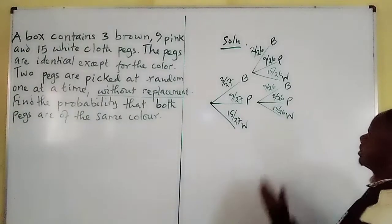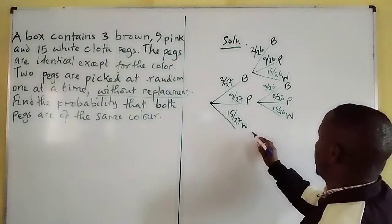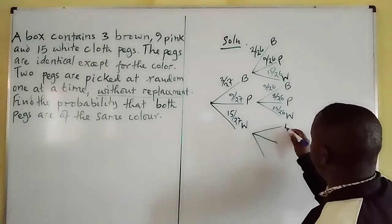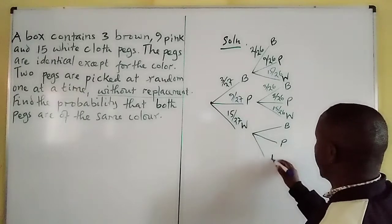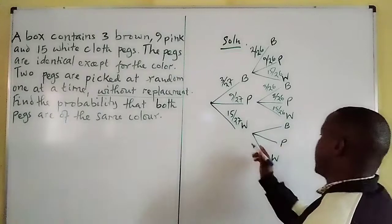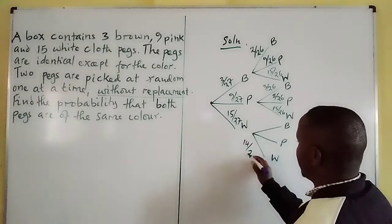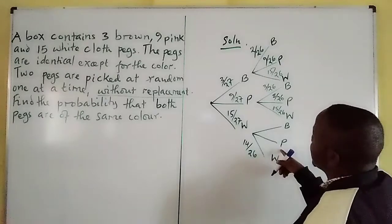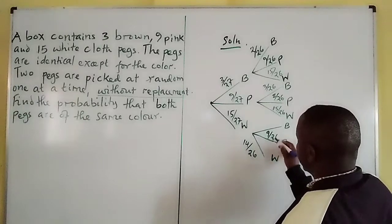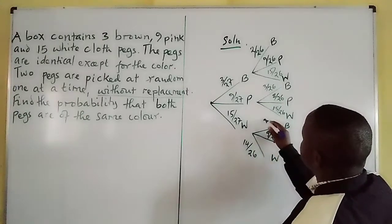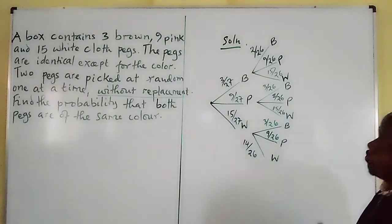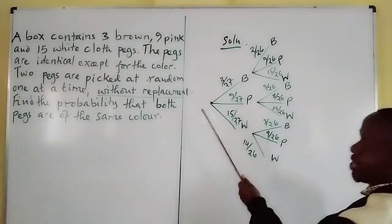There is no replacement — you can see in the second picking all totals are out of 26. If we had picked white, we can pick brown, pink, or white again. Picking white again now becomes 14 out of 26. Pink is not affected, so pink remains 9 out of 26, and brown remains 3 out of 26. This is the correct tree diagram for picking without replacement.